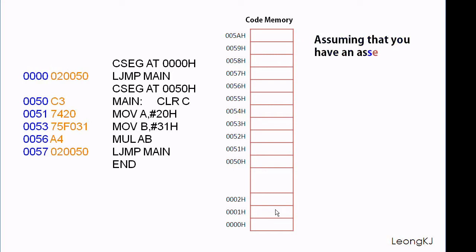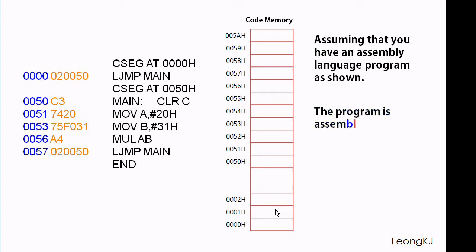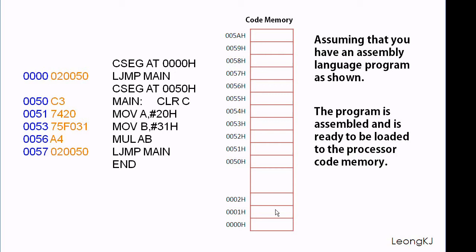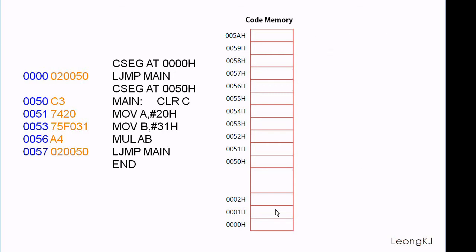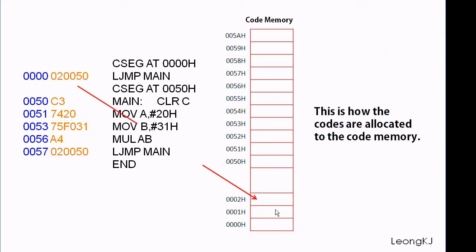Assuming that you have the assembly language program as shown, the program is assembled and is ready to be loaded to the processor code memory. This is how the codes are allocated to the code memory.